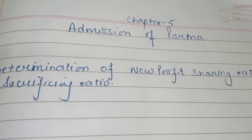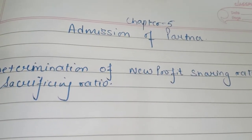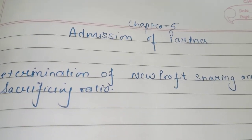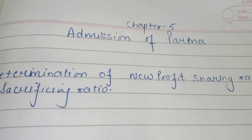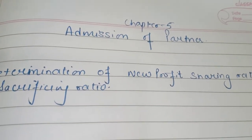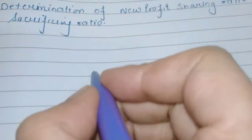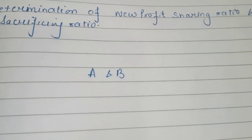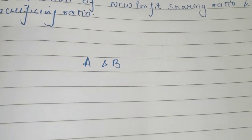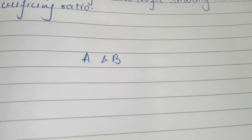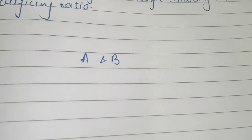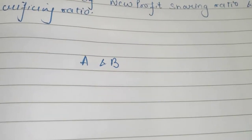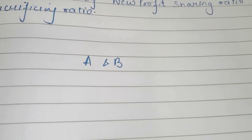The first thing we need to understand is why there is a need for admission of a partner. Admission means 'kisi ka aana' — someone coming in. So when we talk about admission of a partner, if a firm has two partners A and B, due to some reason — maybe they need more funds, or maybe they are not able to devote proper time — they need another person who could help them.